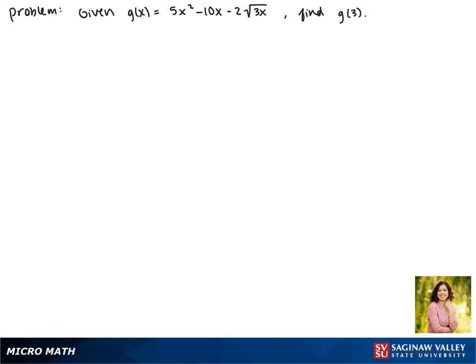Given that g of x equals 5x squared minus 10x minus 2 times the square root of 3x, find g of 3.